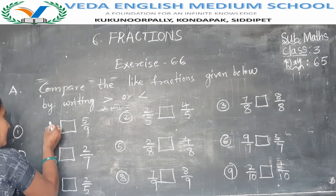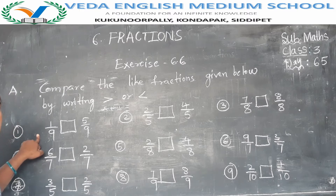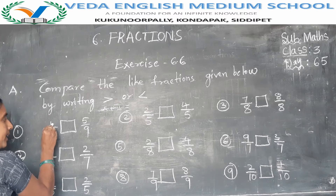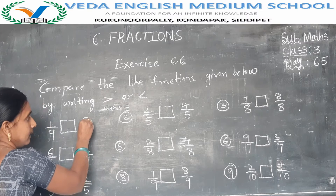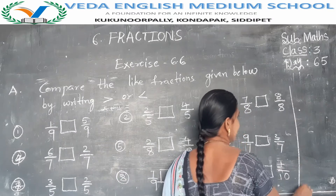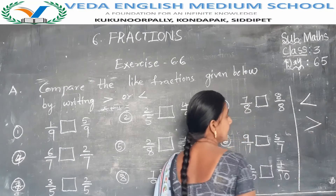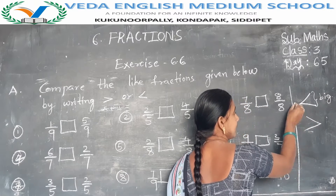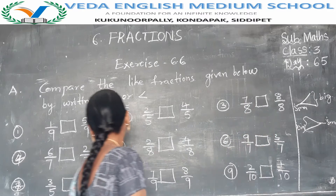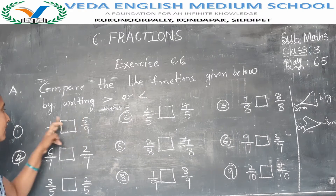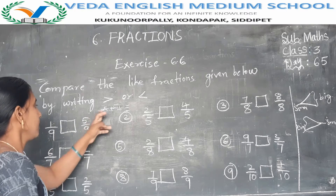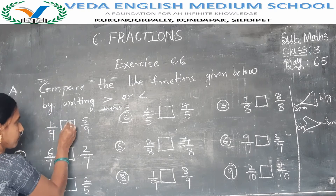The numerators change. Here the numerator is 1 and here the numerator is 5. Which one is bigger — 1 or 5? In the first fraction the numerator is smaller, that is 1. In the second fraction the numerator is 5, which is the bigger number. The open side of the symbol faces the big number and the closed side faces the smaller number. Here 1 by 9 is the smaller fraction, so we use less than.